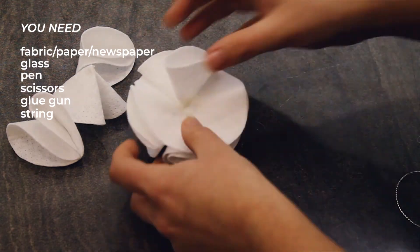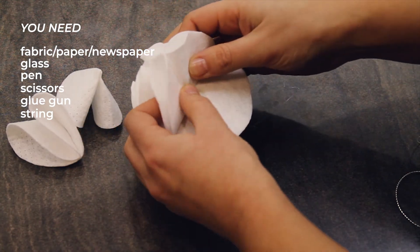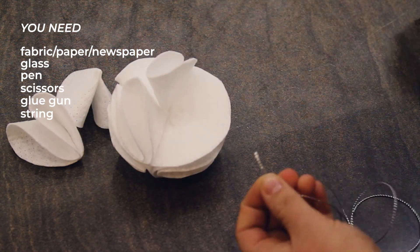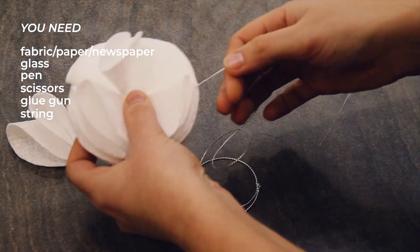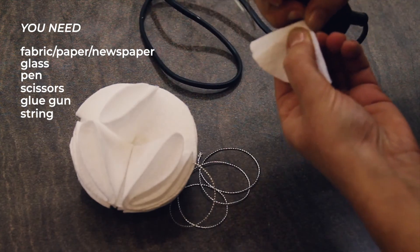This time, glue a fancy Christmas string together with one of the pieces on the interior side like so. This is because you'll need something to hang them in your beautiful Christmas tree.